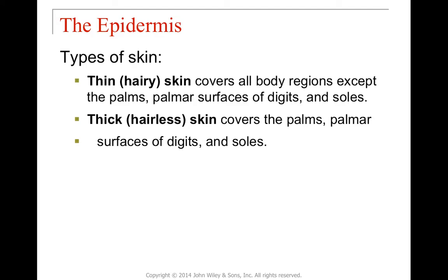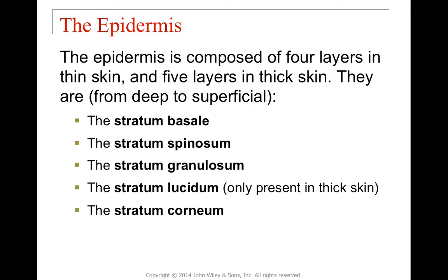There are two major types of skin. Thin skin covers almost all of the body; the exceptions are the palms of the hands, the palmar surfaces of the digits, the soles of the feet, and the plantar digits. Those areas have thick skin. The difference is that thin skin has four layers and thick skin has five layers — the extra layer provides added protection for these high-activity areas.